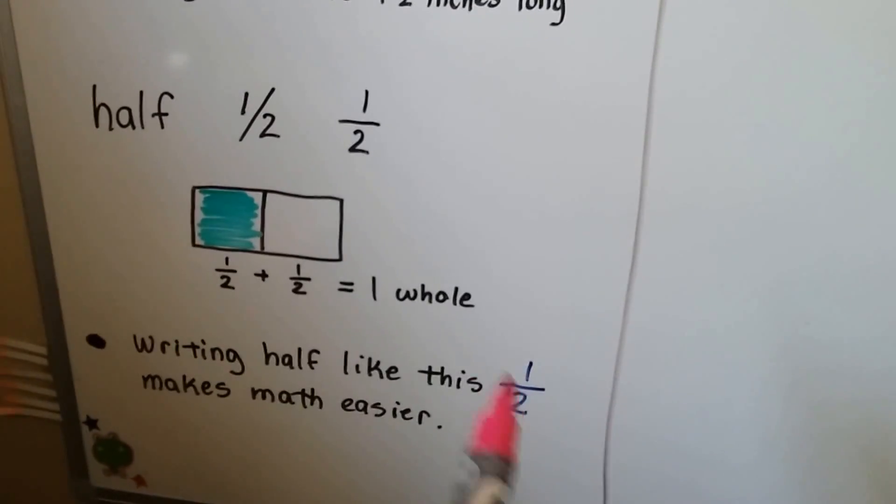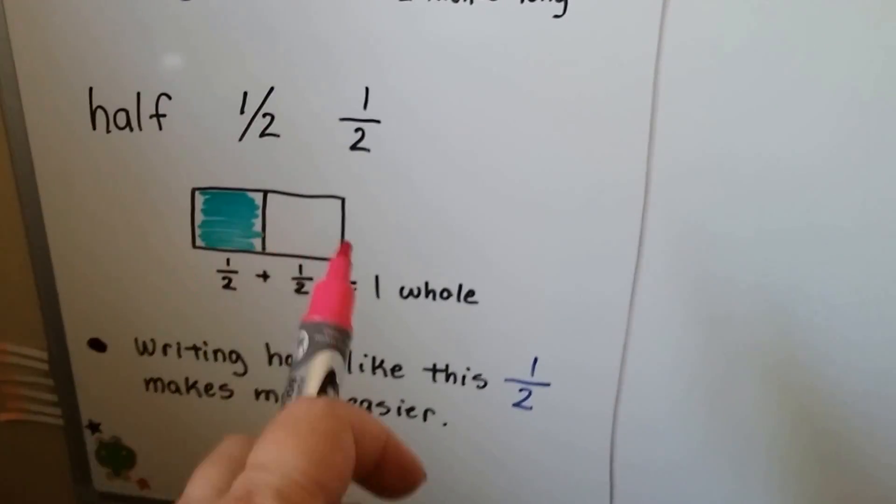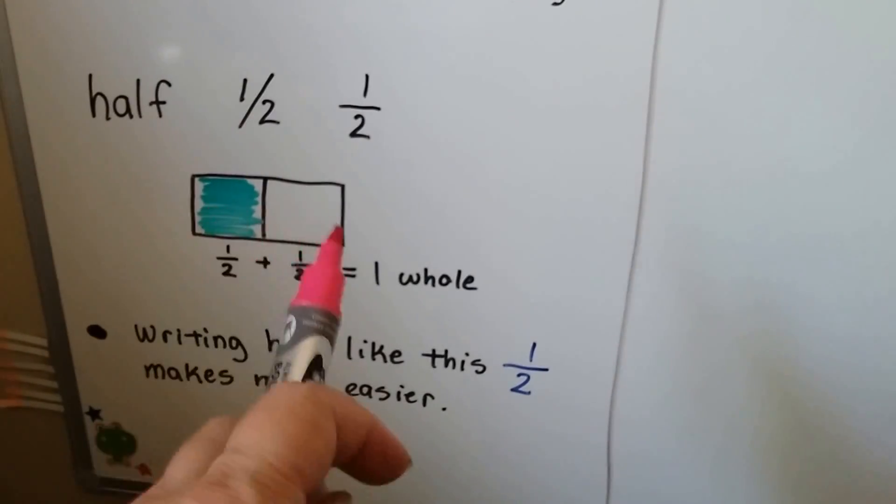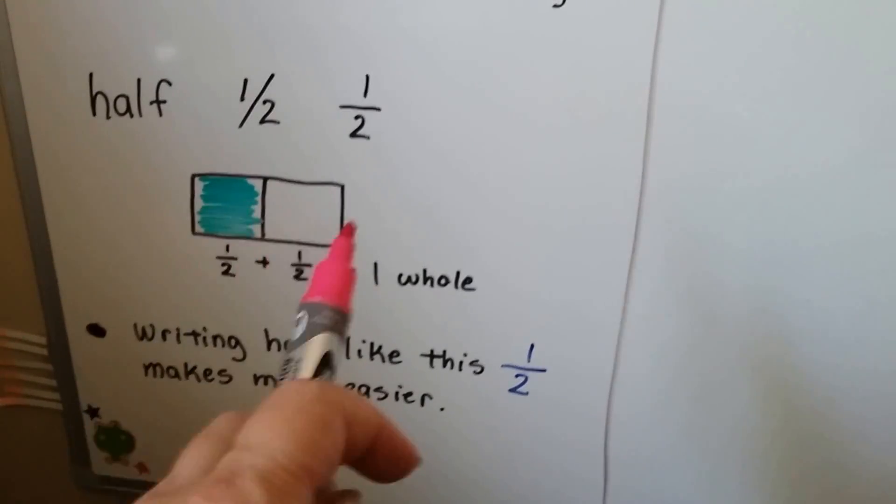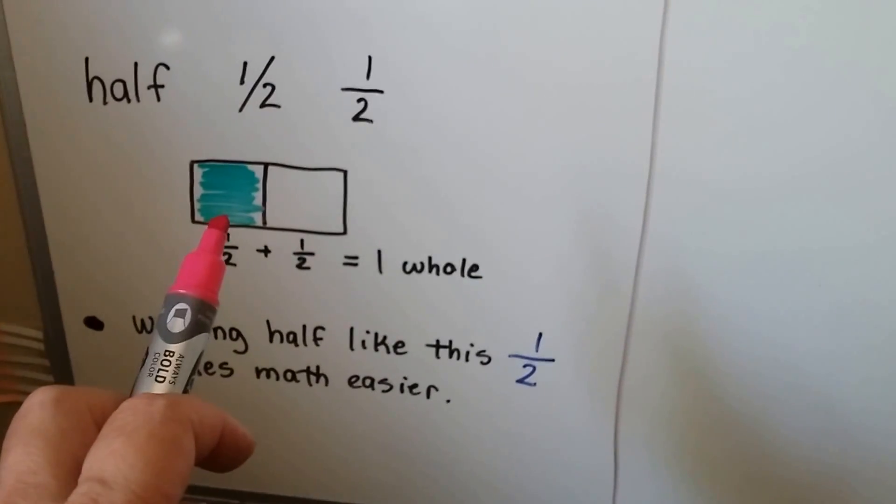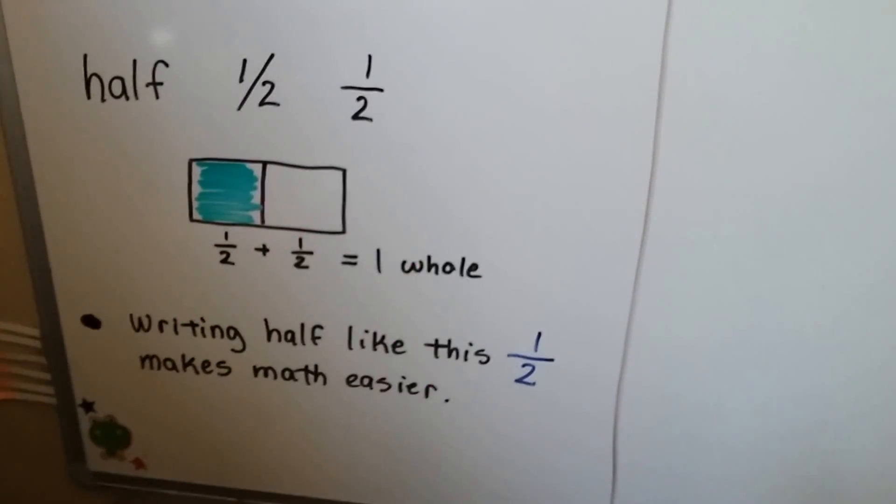So that's half. It's when you split a whole thing right down the center evenly so it's fair and the equal shares are on each side. And when you have a half and another half, that makes a whole one.